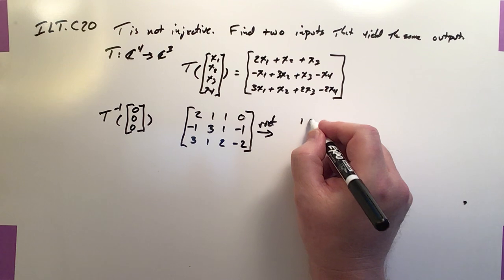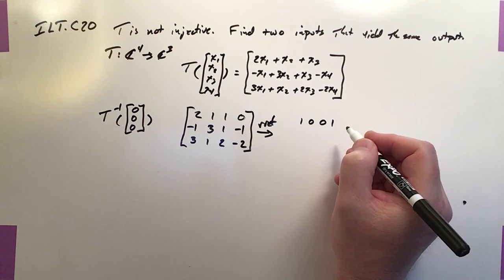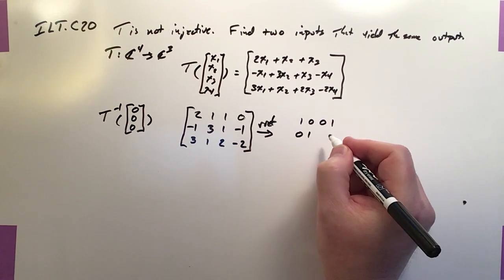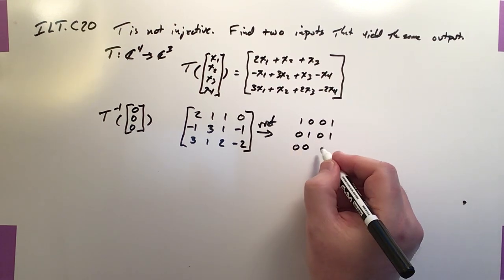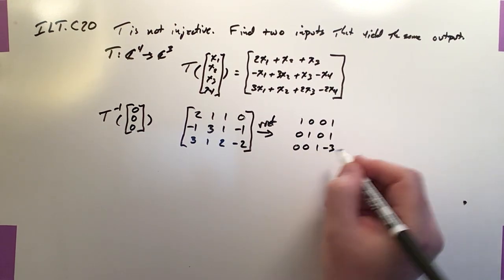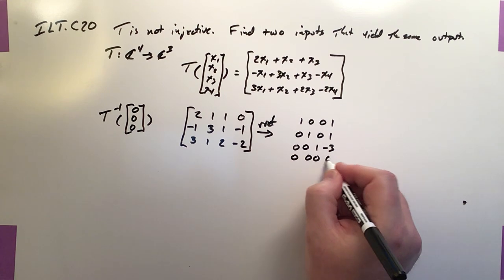So this is what comes out of it. So we've got 1, 0, 0, 1, 0, 1, 0, 0, 1, negative 3, and 0, 0, 0, 0.